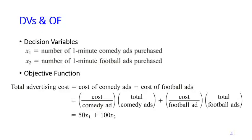And then the objective function is to obtain a minimum cost. So the cost for each comedy ad is $50, and then the total comedy ads that we want to purchase equals X1, so 50 times X1.